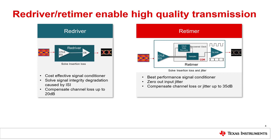A Redriver is the simplest signal conditioner, which can solve signal degradation caused by inter-symbol interference. A Retimer is the advanced, best-performance signal conditioner, which restores signal integrity by removing input noise and random jitter.